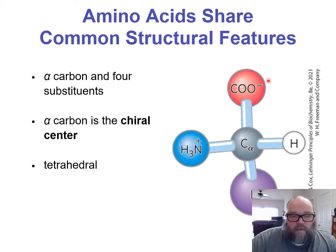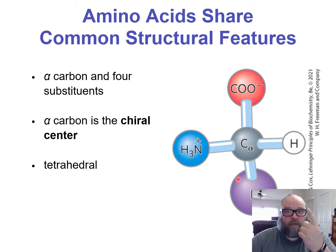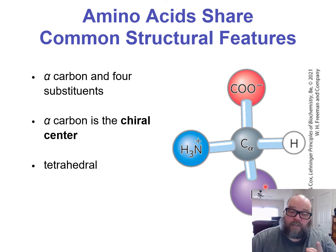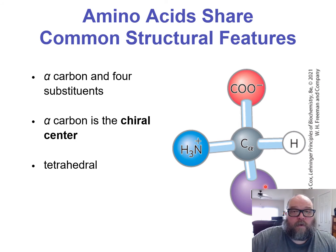Amino, alpha carbon, carboxyl — that's the set. What's labeled in purple is referred to as an R group. Anytime you see in cell biology, biochemistry, or organic chemistry a molecule that just has R there, that means there is a side chain, and whatever side chain is there will tell you what the overall compound, this overall molecule, is.